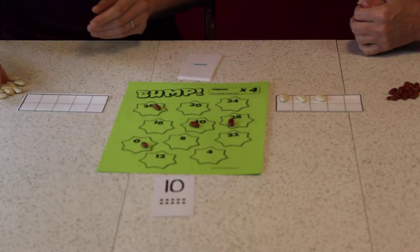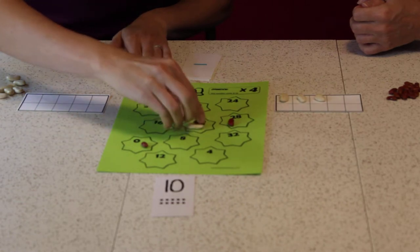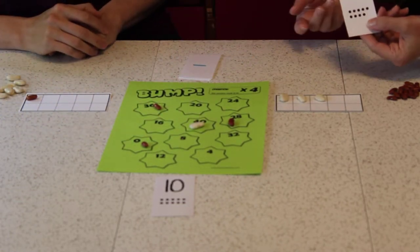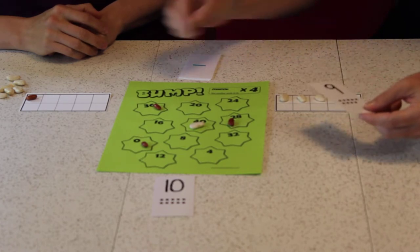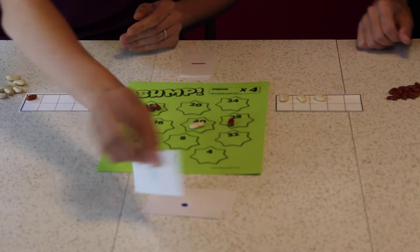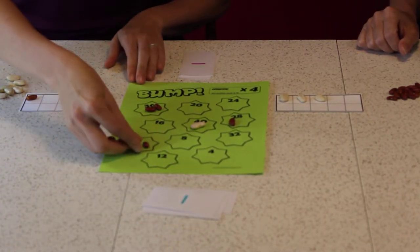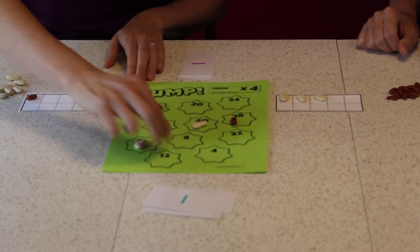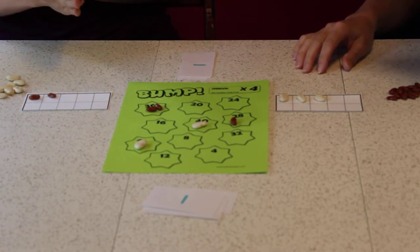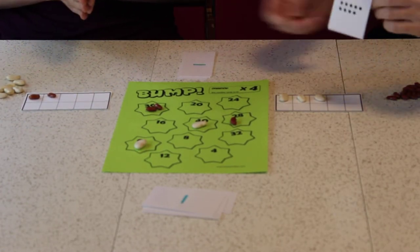All right. Ten times four is forty. Okay, bump. And I got nine again. So nine times four is thirty-six. Your turn is coming. Zero times four. There we go. I have two. I'm catching up to you. Another nine. Nine times four is thirty-six.